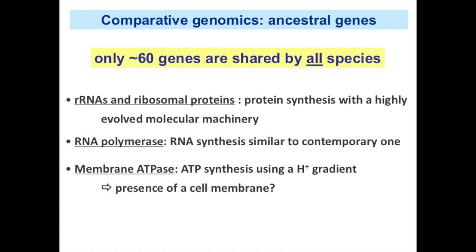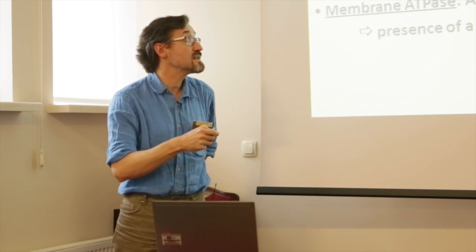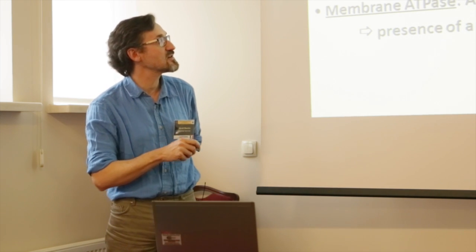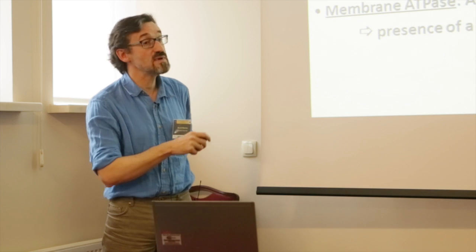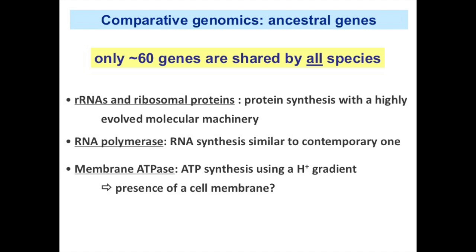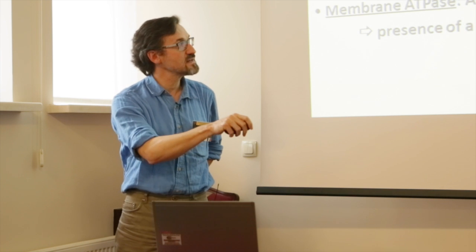Applying this method, you retrieve about 60 genes shared by all species. The most abundant are ribosomal RNAs and ribosomal proteins, suggesting LUCA had a highly evolved protein synthesis machinery similar to the present-day one. There are also RNA polymerase subunits, meaning LUCA could synthesize RNA with polymerases similar to modern ones, and membrane ATPases, indicating LUCA used a proton gradient to synthesize ATP — implying it already had a cell membrane.